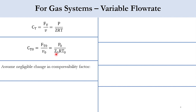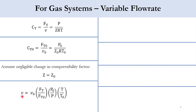Assuming negligible change in the compressibility factor, we can say Z equals Z0. Once we divide these two expressions, we get that v, the volumetric flow rate at the exit of the reactor, equals the initial flow rate multiplied by (Ft/Ft0) times (P0/P) times (T/T0). Here T is the outlet temperature, T0 is the inlet temperature, P0 is the inlet pressure, and P is the outlet pressure. For the liquid phase system it was simply v equals v0, but for the gas phase system these additional terms are included.